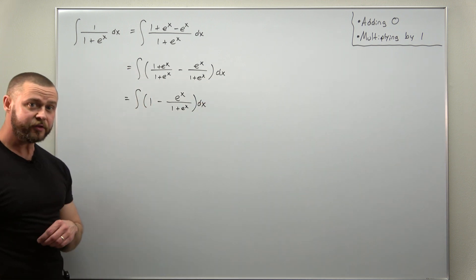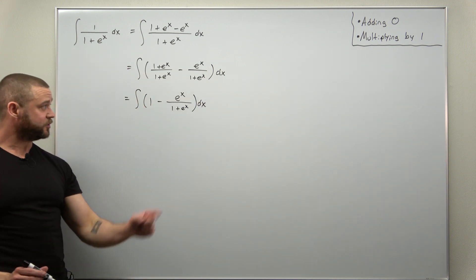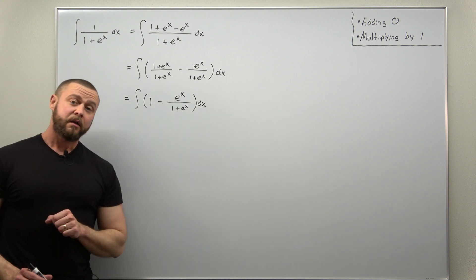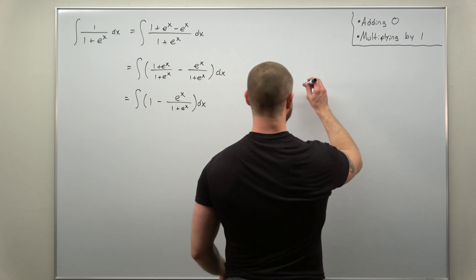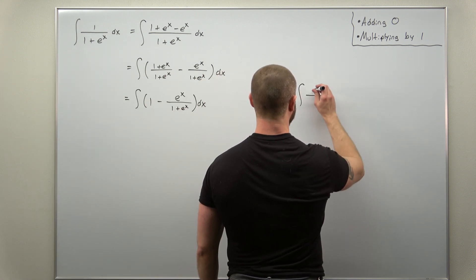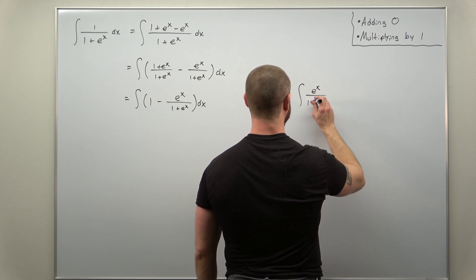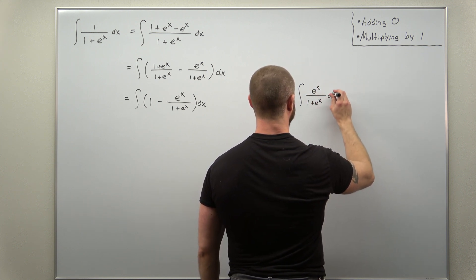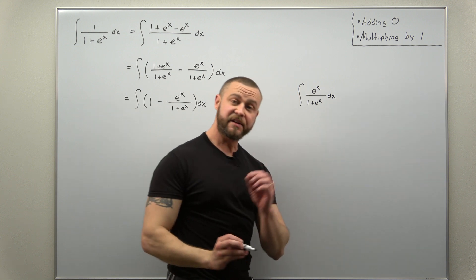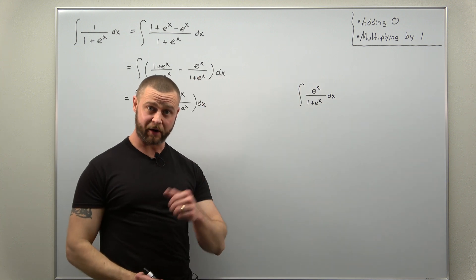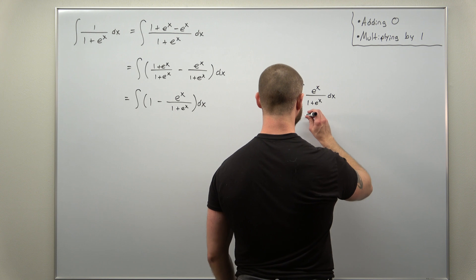All right, so all that we need to do now is implement our substitution for this one. Let's go ahead and do that over to the side here. So the integral of e to the x divided by 1 plus e to the x. This is now very straightforward with our substitution u as 1 plus e to the x.